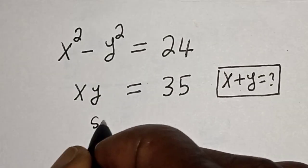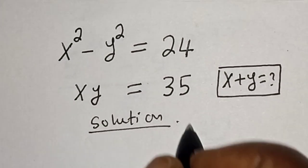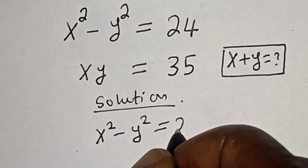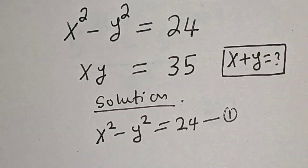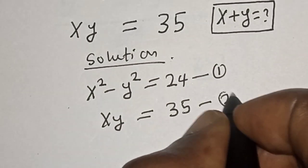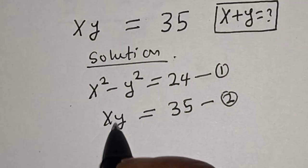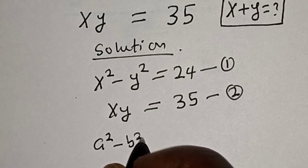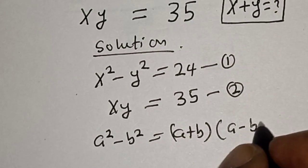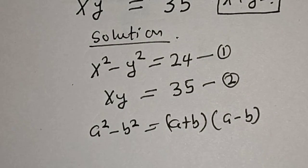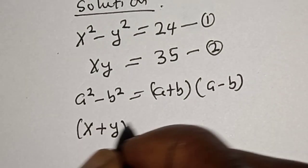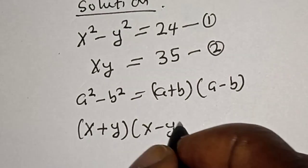Solution: x squared minus y squared is equal to 24 — let's call this equation one. Then x y is equal to 35 — let's call this equation two. Now from equation one, this is a difference of two squares: a squared minus b squared is equal to (a plus b)(a minus b). In this case a is x and b is y, so we have (x plus y)(x minus y) is equal to 24.